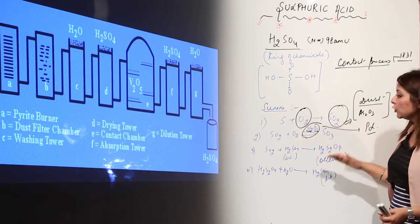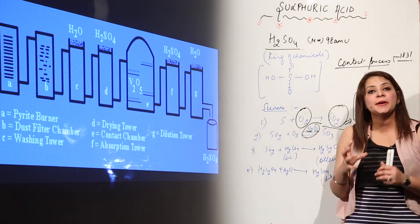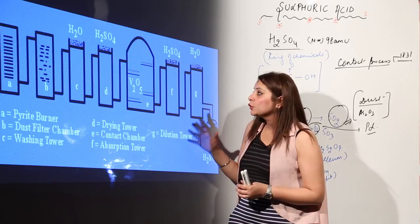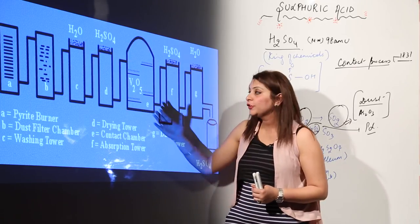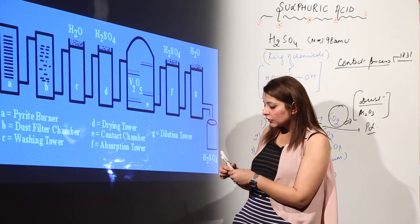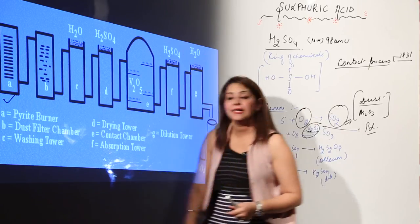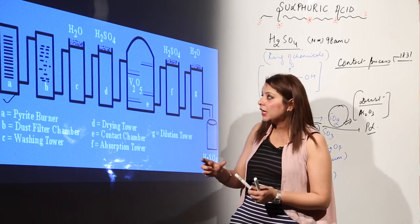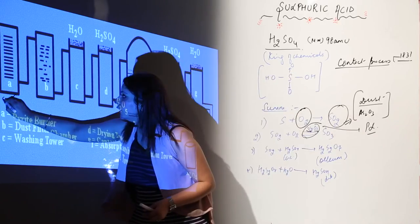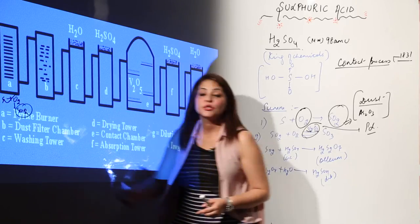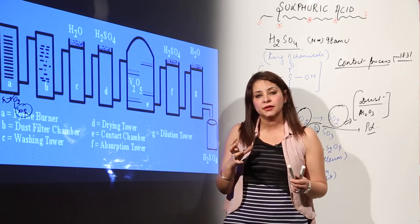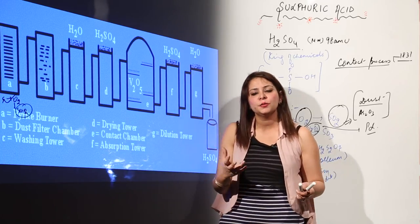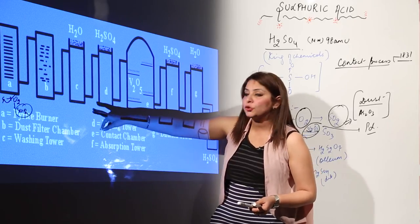These reactions take place in specific towers. Looking at the apparatus used for the contact process, the first tank is where S + O2 → SO2 occurs — sulfur is burnt as air is blown in. This tank is called the pyrite burner. The output from this tank is SO2.